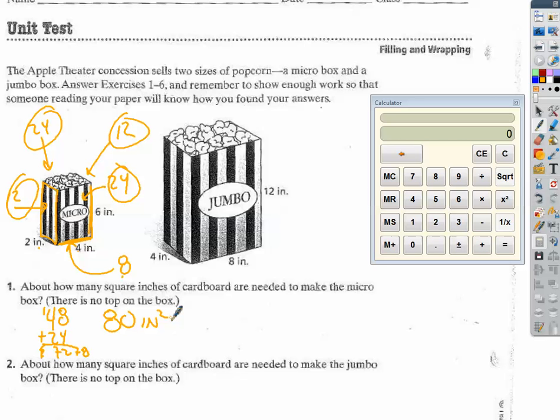How many square inches of cardboard will it take for the jumbo box? Same basic idea. This face is going to be 8 by 12. 8 times 12 is going to be 16, carry the 1. So that's 96 there. We'll have 96 here. And then on this side, we're going to have 4 by 12. 4 by 12 is 48, so this side will also be 48.